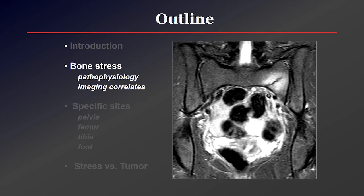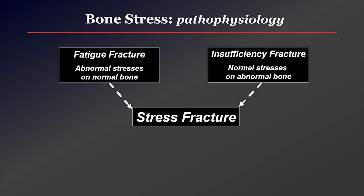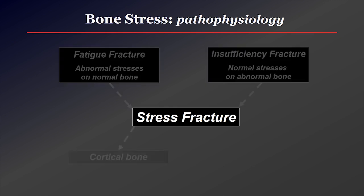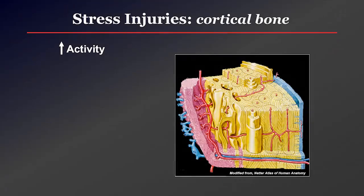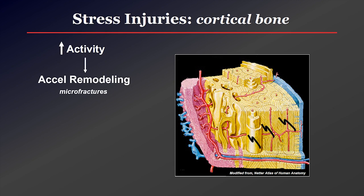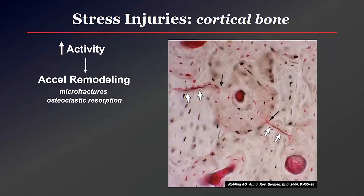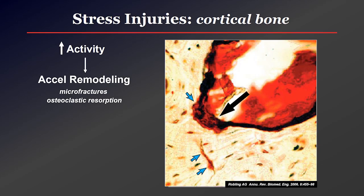In terms of the pathophysiology of bone stress, as an imager I'm more concerned about whether I'm looking at a stress injury in cortical bone or trabecular bone, because these will look different on various modalities. When we increase activity, we begin to get accelerated remodeling, mediated by the development of microfractures within the cortical bone. The first step toward healing is that osteoclasts come in and resorb bone around these microfractures, waiting for osteoblasts to come and lay down new bone. You can see some of these microfractures within dense cortical bone, and an advancing osteoclastic front heading toward one of these microfractures in preparation for the osteoblasts.